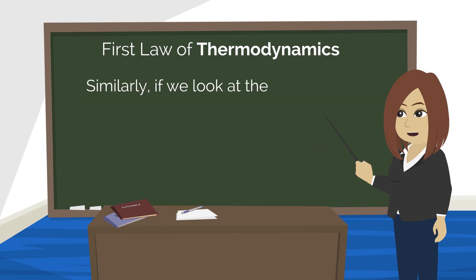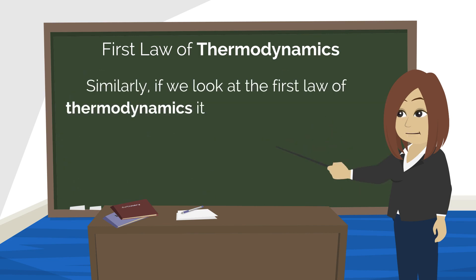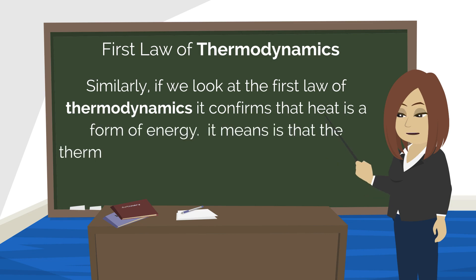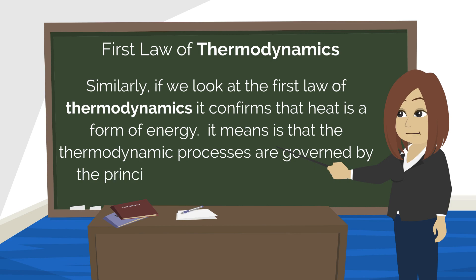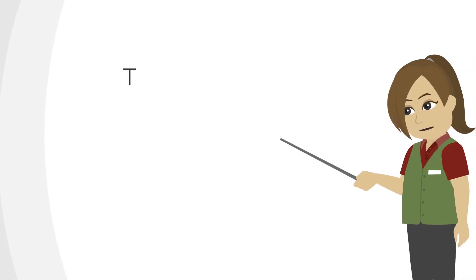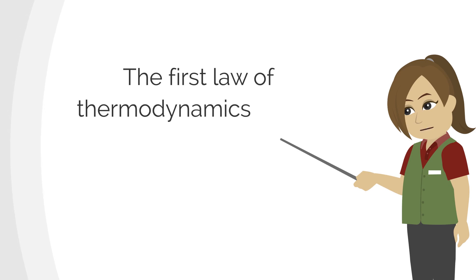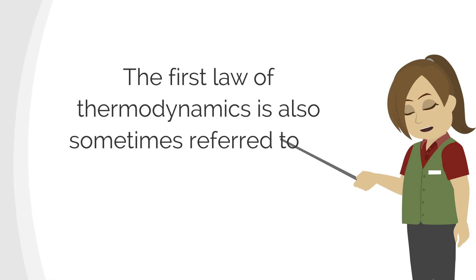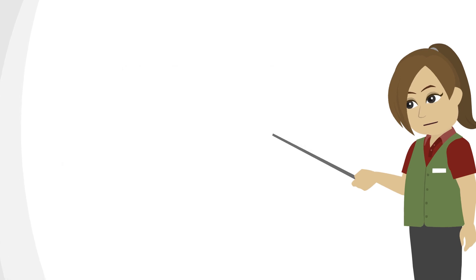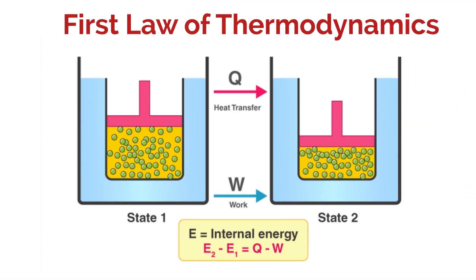Similarly, if we look at the first law of thermodynamics, it confirms that heat is a form of energy. It means that thermodynamic processes are governed by the principle of conservation of energy. The first law of thermodynamics is also sometimes referred to as the law of conservation of energy. Let's see the basic diagram to understand the first law of thermodynamics.